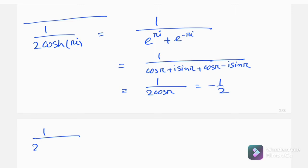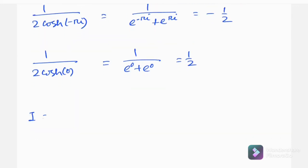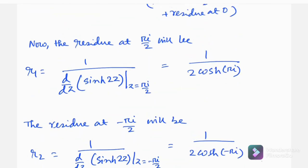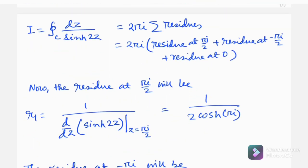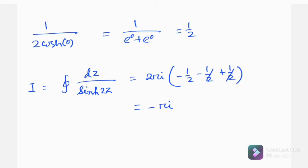And 1/(2·cosh(0)) = 1/(e^0 + e^0) = 1/2. So the integral equals 2πi times (R1 + R2 + R3) = 2πi·(−1/2 + (−1/2) + 1/2) = 2πi·(−1/2) = −πi. This is the final value of the integration.